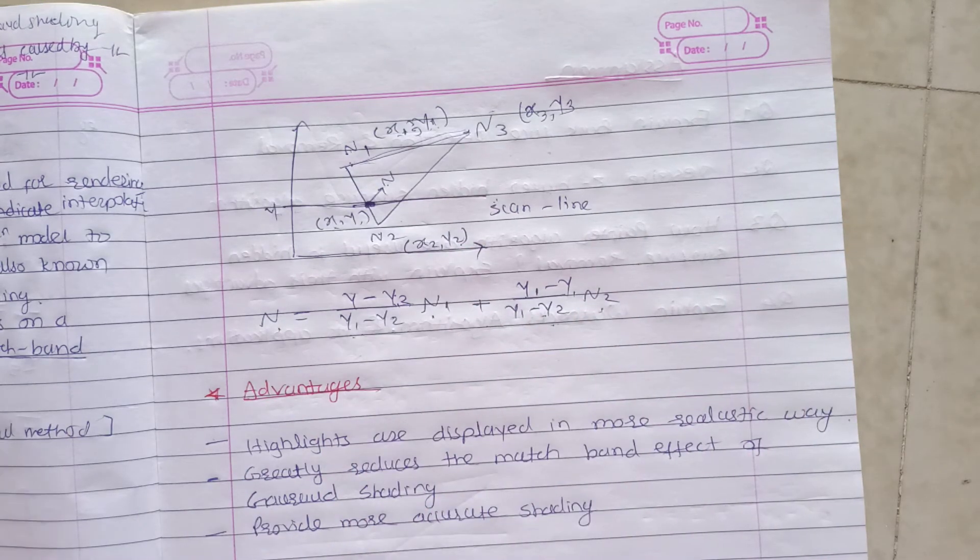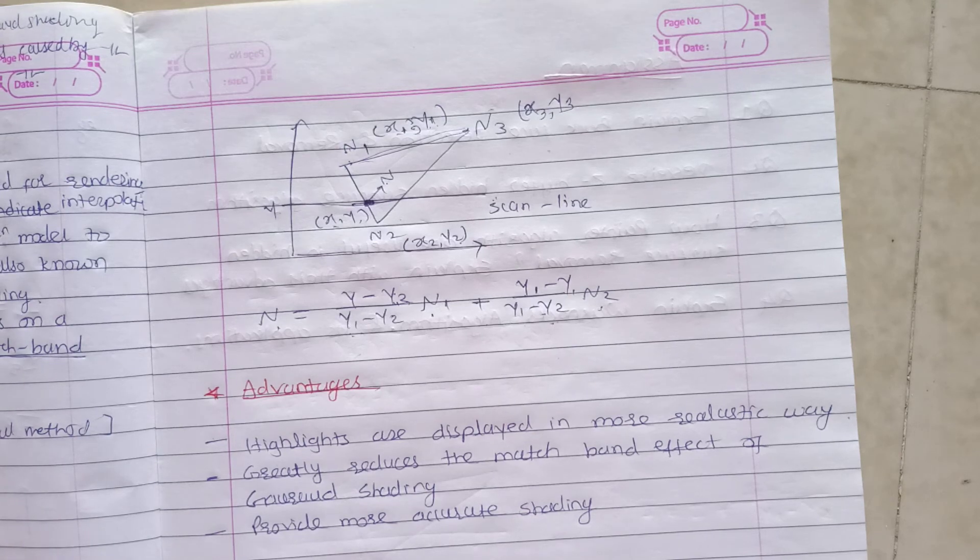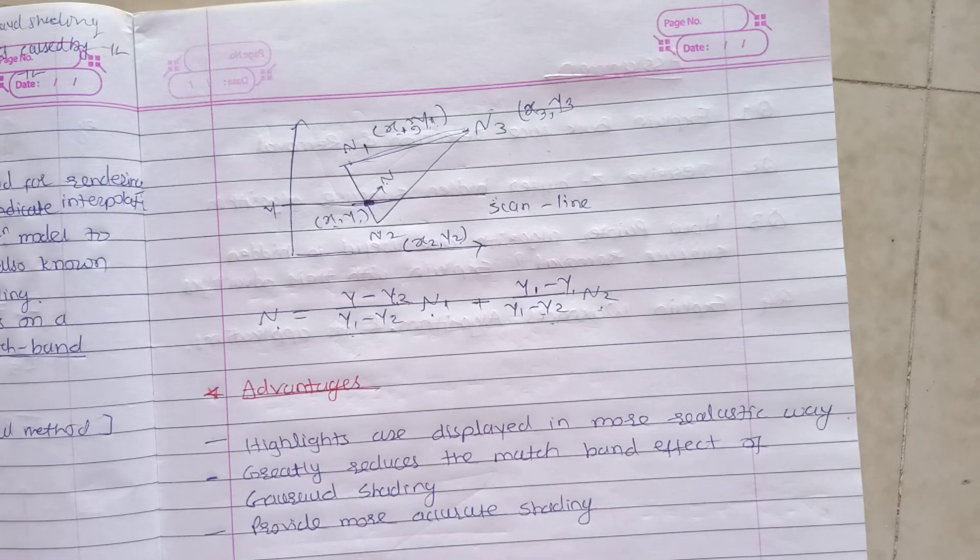This is all about Phong shading. The difference is that the Mach band disadvantage created by Gouraud shading is overcome by Phong shading.